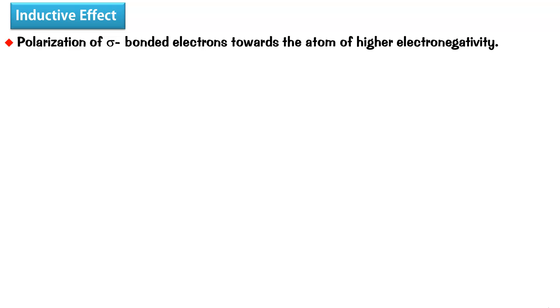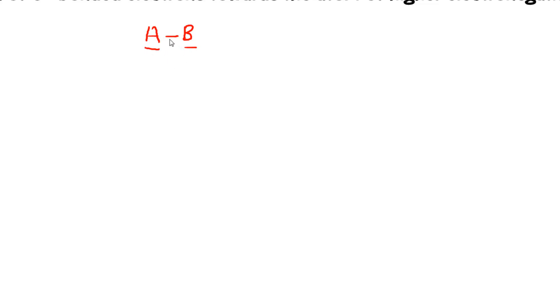Inductive effect is defined as the polarization of sigma bonded electrons towards the atom of higher electronegativity. If we have two different atoms A and B attached to each other — B is not boron, just any atom or group — and B is more electronegative than A, the shared pair of electrons which would be right in the middle in a perfect covalent bond would tend to move towards B. This polarization of sigma bonded electrons is called inductive effect.